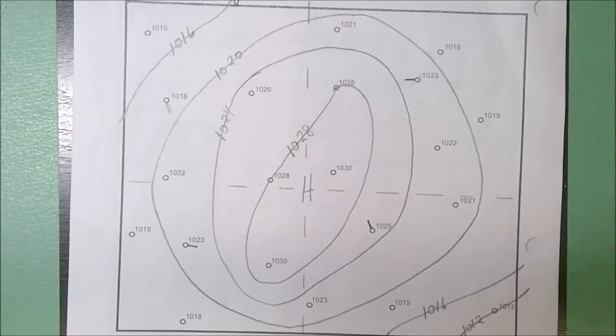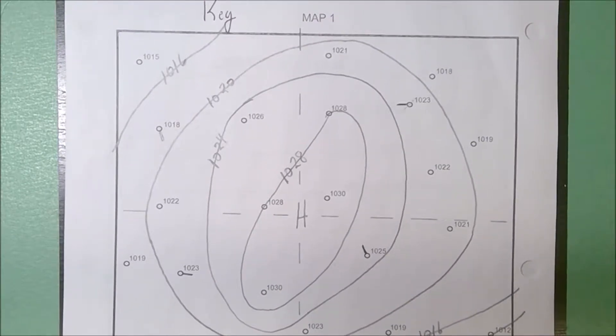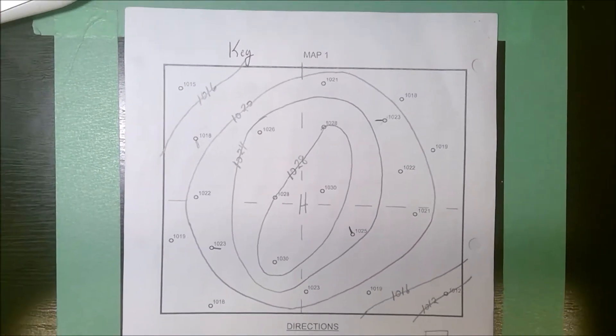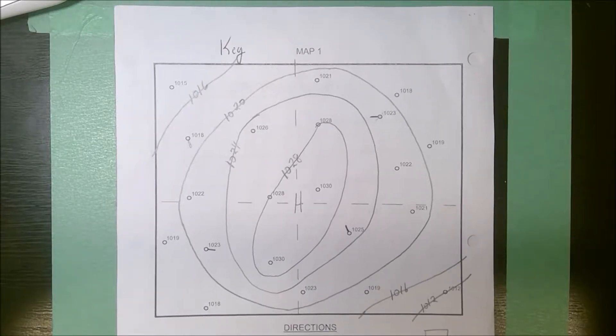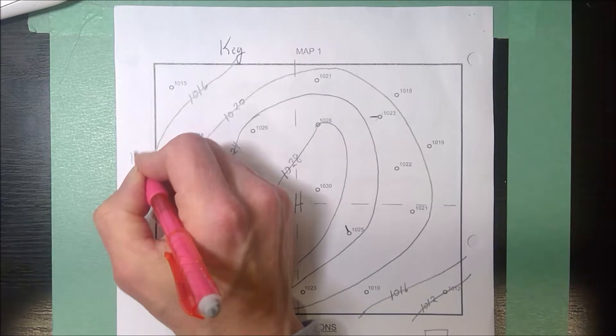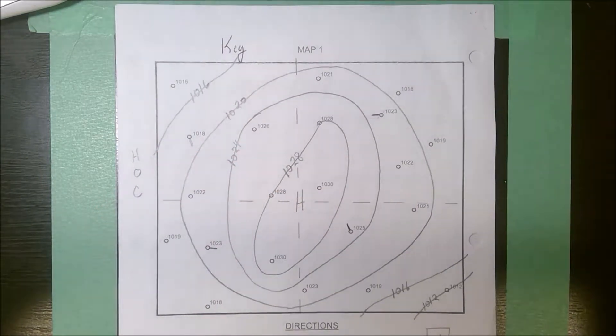The first isobar map you did in class, you could actually check this, but these were the isobars that you drew. This is a high pressure. A high pressure is also known as an anticyclone, and you should know, you have to know that in high pressure the winds go out and clockwise. So a mnemonic that you can use for this is hock.